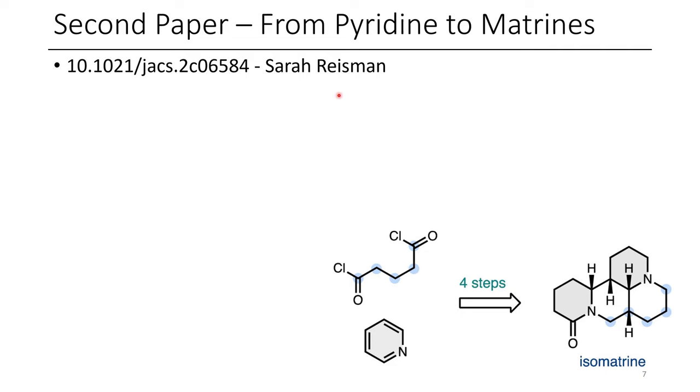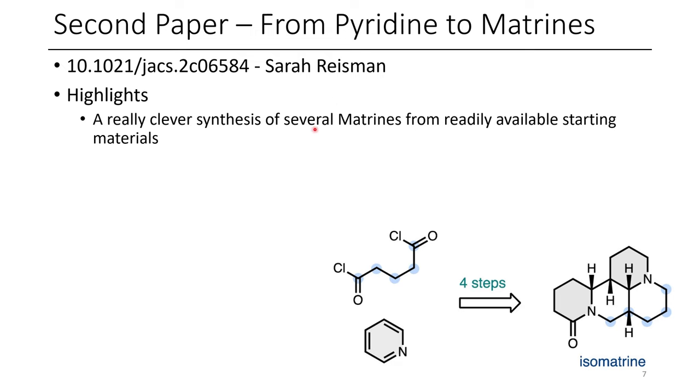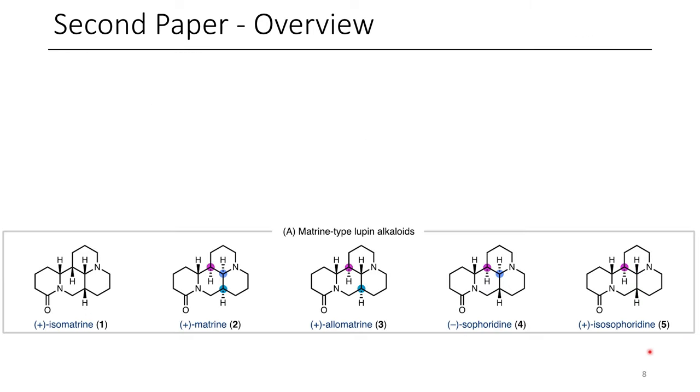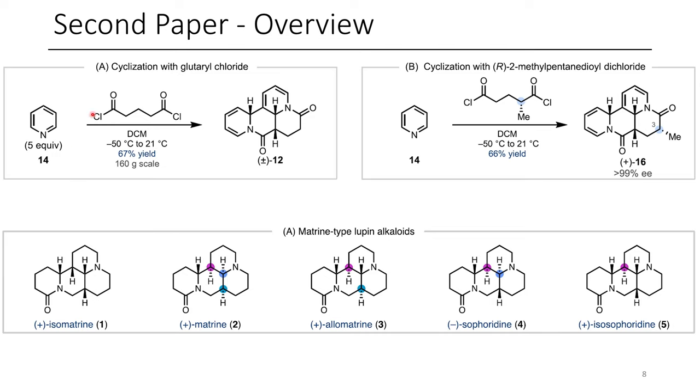So the second paper for today is from Sarah Reisman's lab. The lead author on this paper, Jeff, is actually an active member of the Discord, which was nice. I saw this paper when it was a preprint, and I'm excited to see that it's finally published. And so the highlights of this paper include a really clever synthesis of several matrine natural products from readily available starting materials. They literally just use this diacyl chloride and pyridine as their starting materials, and they elaborate one natural product into several other natural products. These are some examples of the different matrine alkaloids, and the strategy that they employ is the use of pyridine with this diacyl chloride forming this adduct shown here, which is quite an impressive transformation as several carbon-carbon bonds are formed.